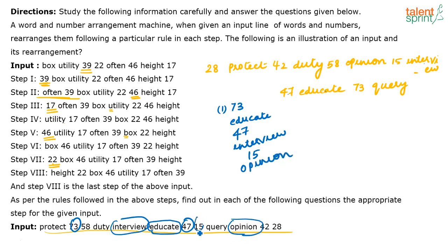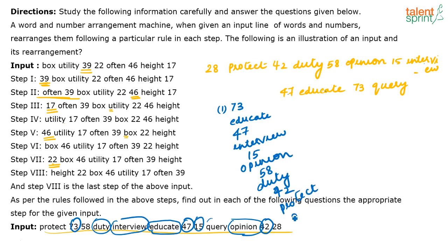Now all odd numbers are done, so we start with the biggest even number, 58. After 58 comes 'duty,' then 42, then 'query' or 'protect.' Since 'opinion' and 'duty' are already placed, 'protect' comes next, followed by 28. So if you count: 73, educate, 47, interview, 15, opinion, 58, duty, 42, protect, 28 — that is the step we are looking at.